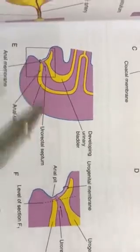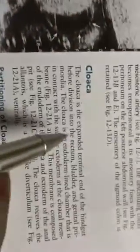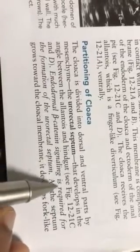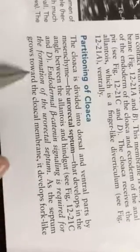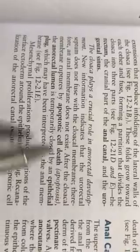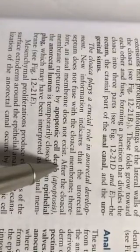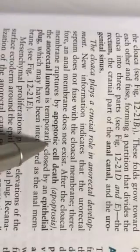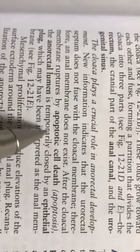By the seventh week, the cloacal membrane usually disappears by apoptotic cell death. The cloaca is an expanded terminal portion. The urorectal septum development depends on endodermal beta-catenin signaling — this is very important for postgraduate exams. The urorectal septum develops and divides the cloaca into three parts: the rectum, upper part of the anal canal, and the urogenital sinus. Then cloacal membrane rupture takes place by apoptotic cell death. There is lumen formation, but it is temporarily closed.